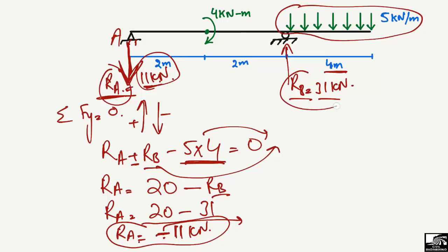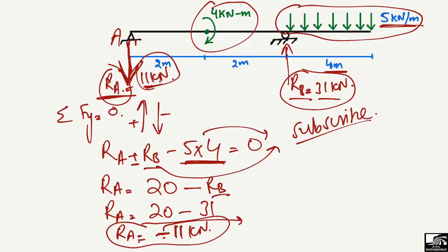So the final results are: support reaction at A is 11 kN (acting downward) and support reaction at B is 31 kN. Hope you guys understand how to find support reactions when there is an applied moment and a distributed load on an overhanging beam. Don't forget to subscribe to our channel. Thank you for watching.